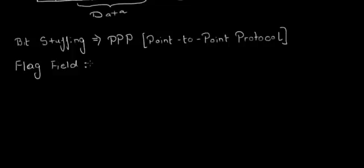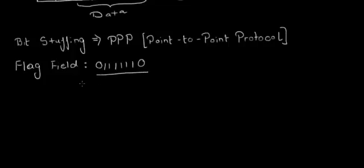The value of the flag field is 01111110. The question is: what if such a value occurs in the actual data that is being sent?